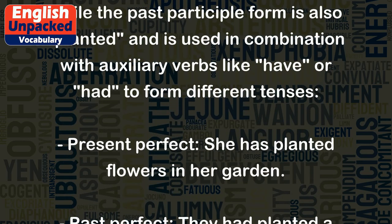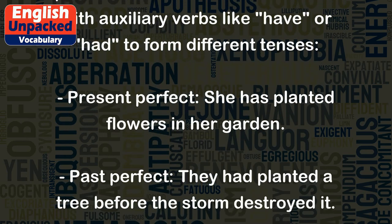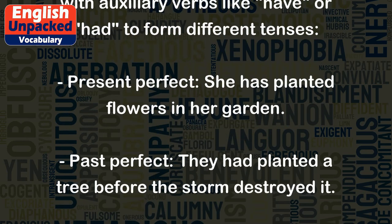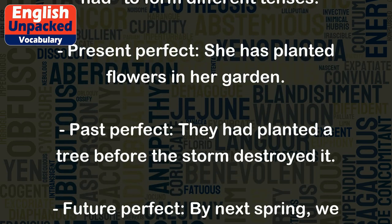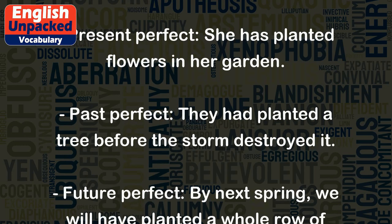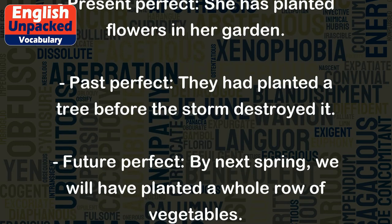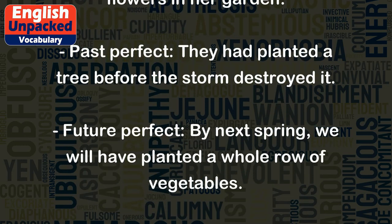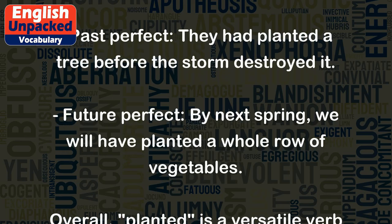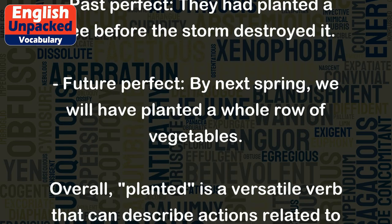Present perfect: She has planted flowers in her garden. Past perfect: They had planted a tree before the storm destroyed it. Future perfect: By next spring, we will have planted a whole row of vegetables.